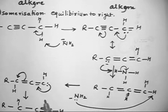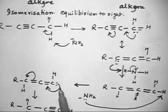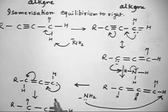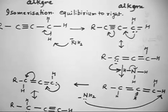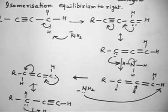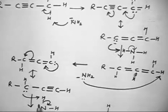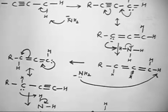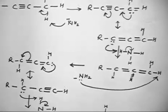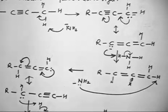In the next step, NH2⁻ again takes H⁺ to form another carbanion. Write the resonating structure: the negative charge shifts to the other carbon. Now there will be a negative charge on this terminal carbon, and this negative charge takes H⁺ from NH3 to give the desired product — the terminal alkyne.